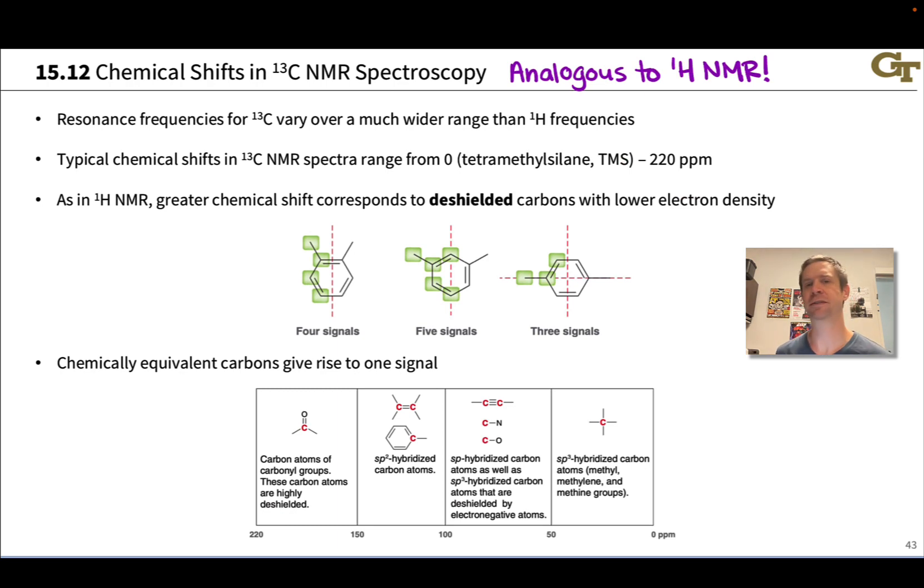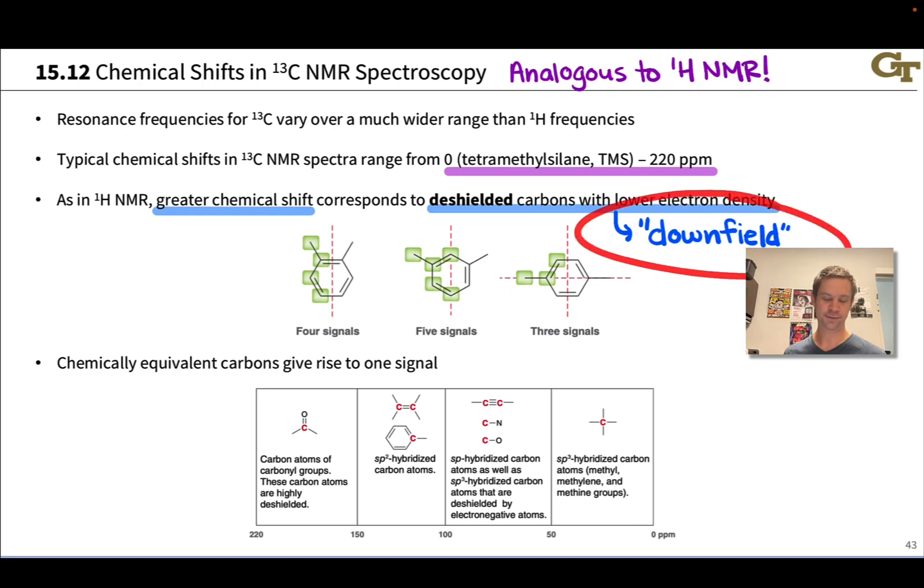Typically 0 for TMS to about 220 ppm for heavily deshielded carbons, for example, carbons in C=O double bonds. And as in proton NMR, greater chemical shift corresponds to deshielded carbons with low electron density around them, and we still refer to this region sort of to the left of the carbon NMR spectrum as downfield.